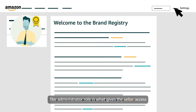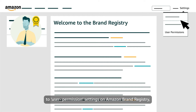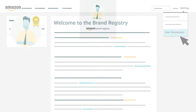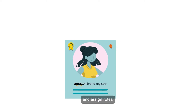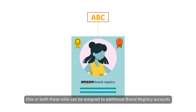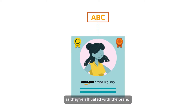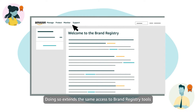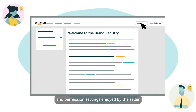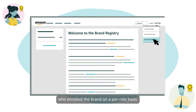The Administrator role gives the seller access to User Permission Settings on Amazon Brand Registry, which they can use to affiliate other Brand Registry user accounts and assign roles. One or both of these roles can be assigned to additional Brand Registry accounts as they're affiliated with the brand, extending the same access to Brand Registry tools and permission settings on a per-role basis.